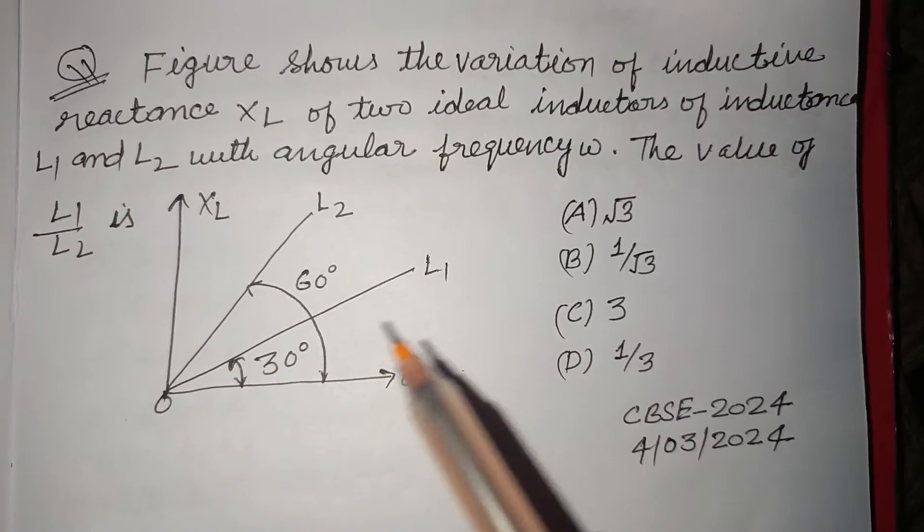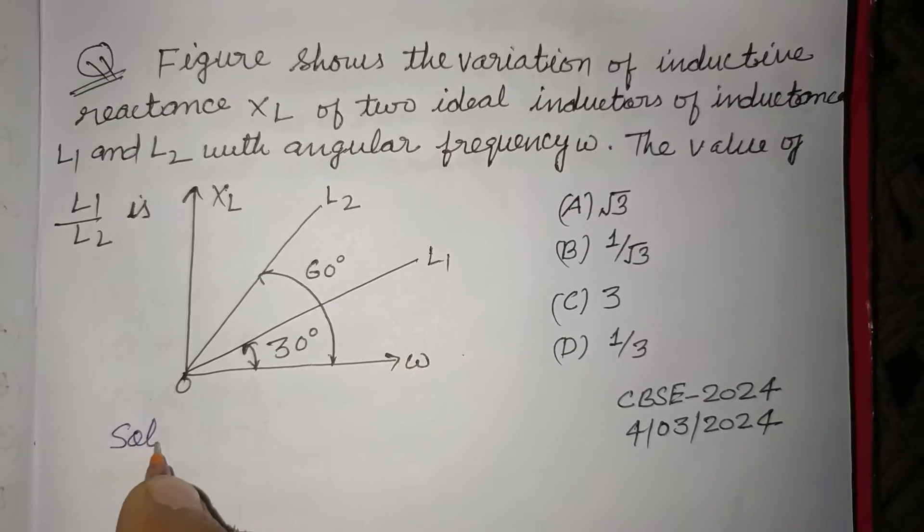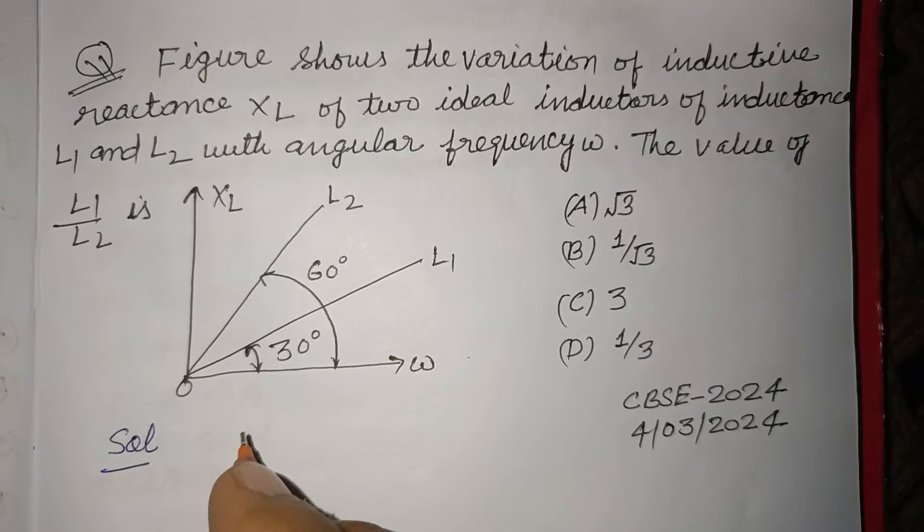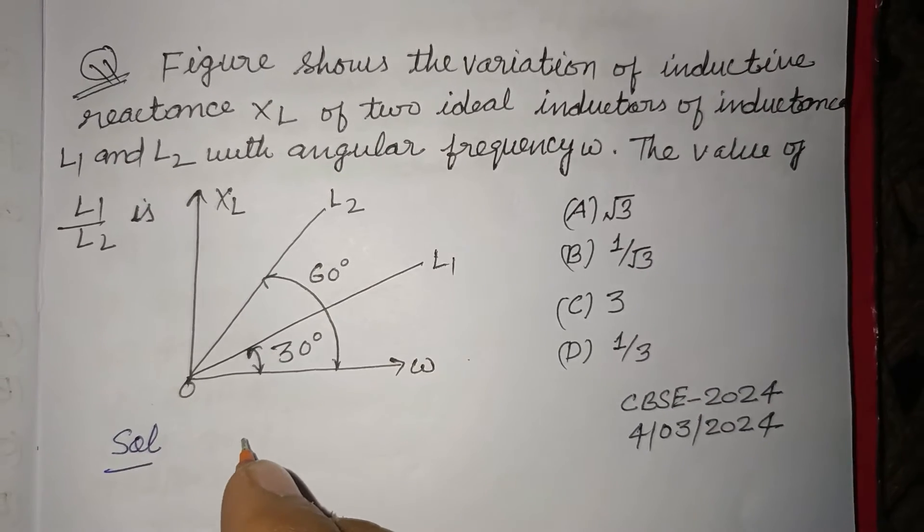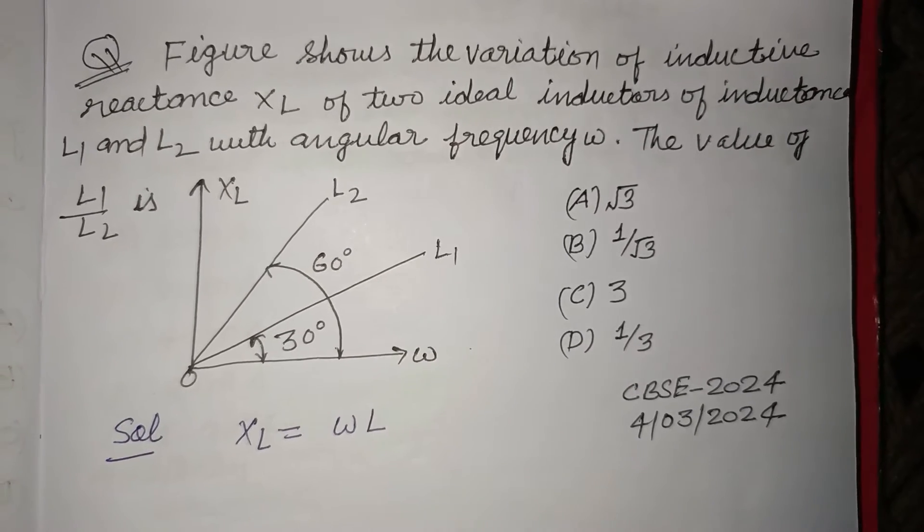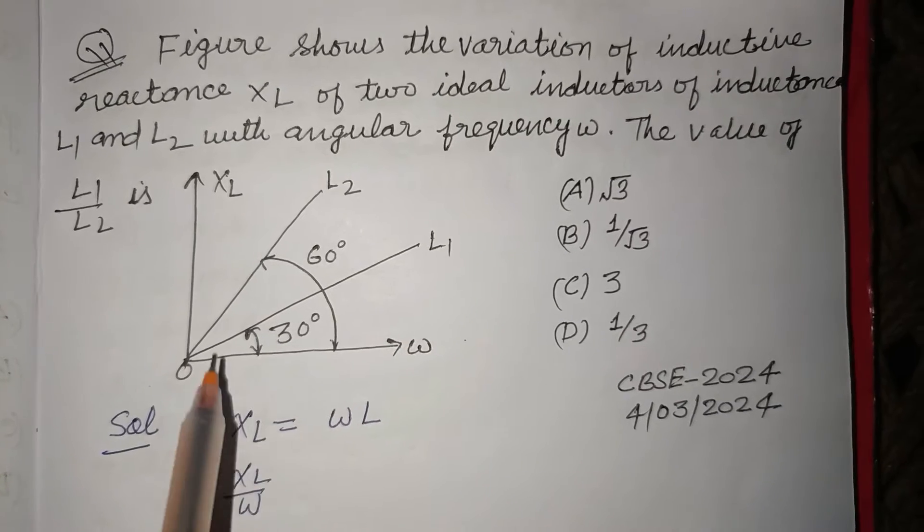Students, you know that inductive reactance is XL, which equals ω times L. So XL over ω, which is the ratio of the vertical axis XL and horizontal axis ω, represents perpendicular over base.